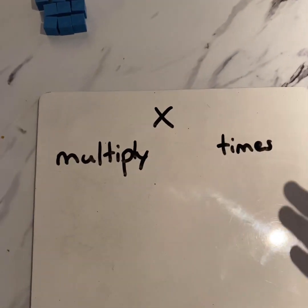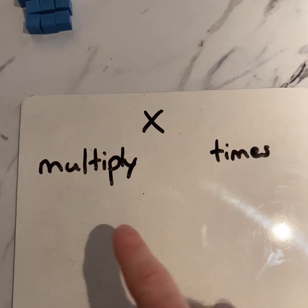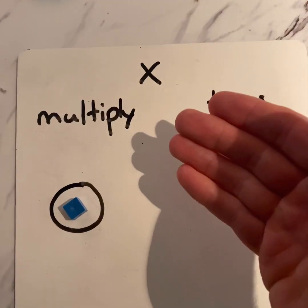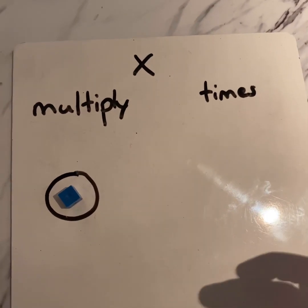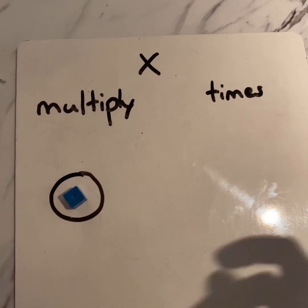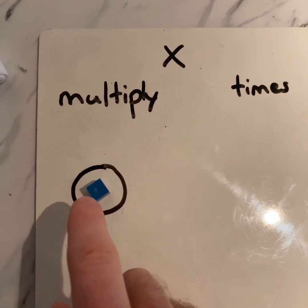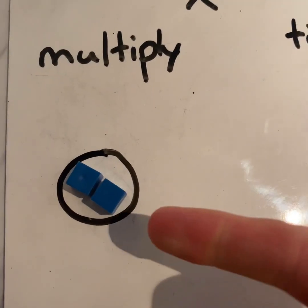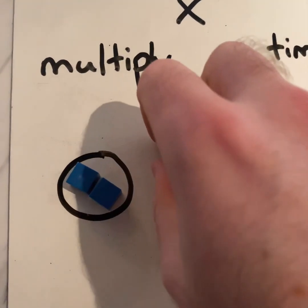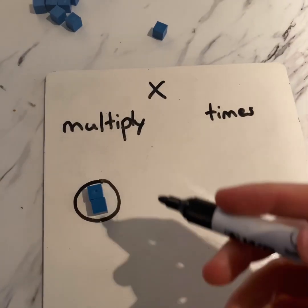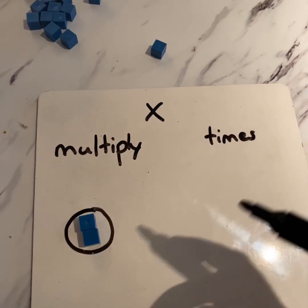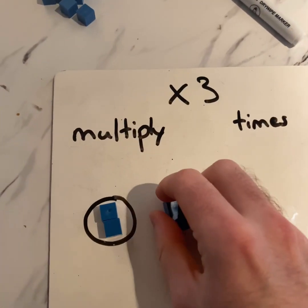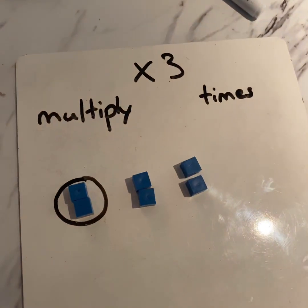Before I look at a times table, I always like to go right back to the symbol for multiply — sometimes known as times — and actually ask: what does it mean? Multiply really means to make an exact copy of something, an exact duplicate. So if this is my box and anything I put in the box multiplies, I've got one here, I multiply, I make an exact copy. Now I've got two squares in the box. If I was to multiply those squares, I get two more. And I can multiply by a specific number of times — so if I multiply the box by three, it means we'd get one, two, three copies of the exact same thing.